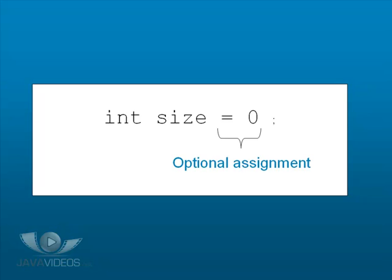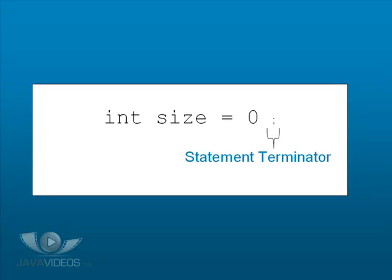And if the variable is undefined, a compiler error will be generated. The final part of the statement is the statement terminator. This is a semicolon, and this is used to signify the end of every statement, not just variable declarations.